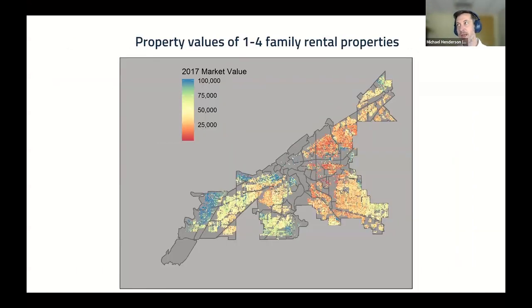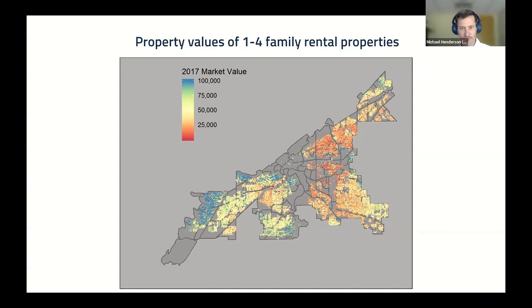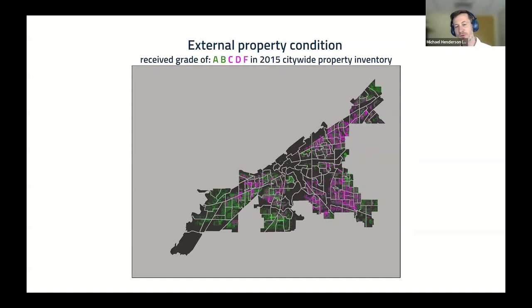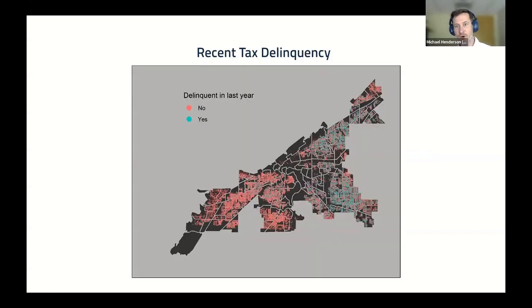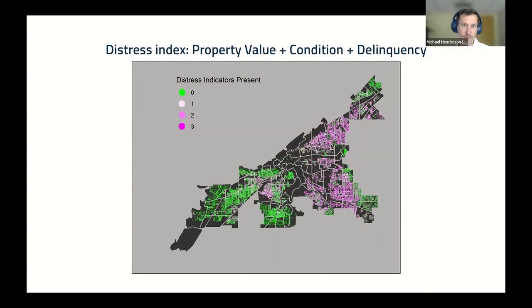The distribution of distressed rental properties shows very distinct patterns. The darker red dots are low-value rental properties below $25,000. A 2015 citywide property inventory shows rental properties graded C, D, or F. Another layer shows rental properties with tax delinquency greater than $500 in the previous year. A combined map of all three distress measures shows deeper shades of pink for properties experiencing multiple types of distress.